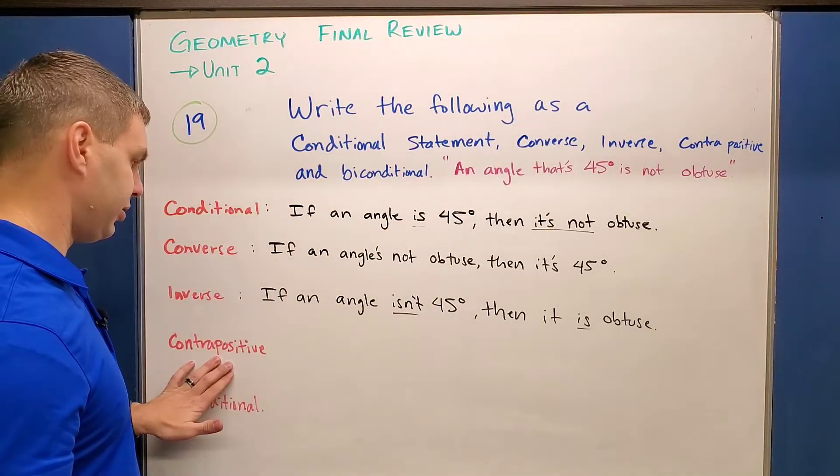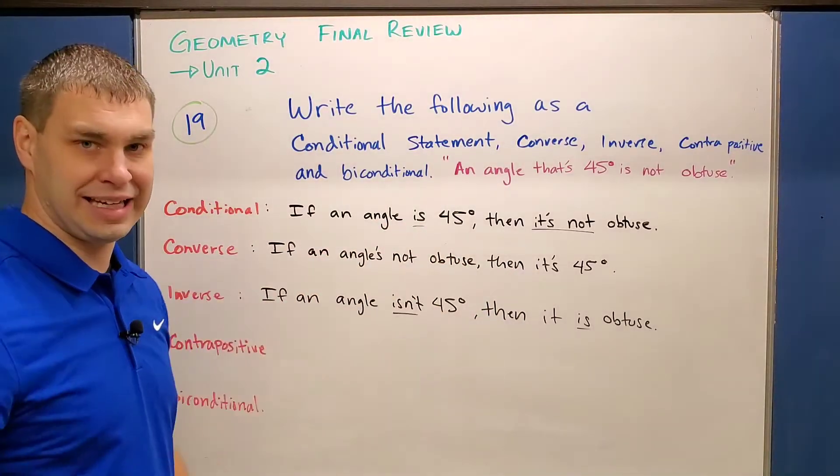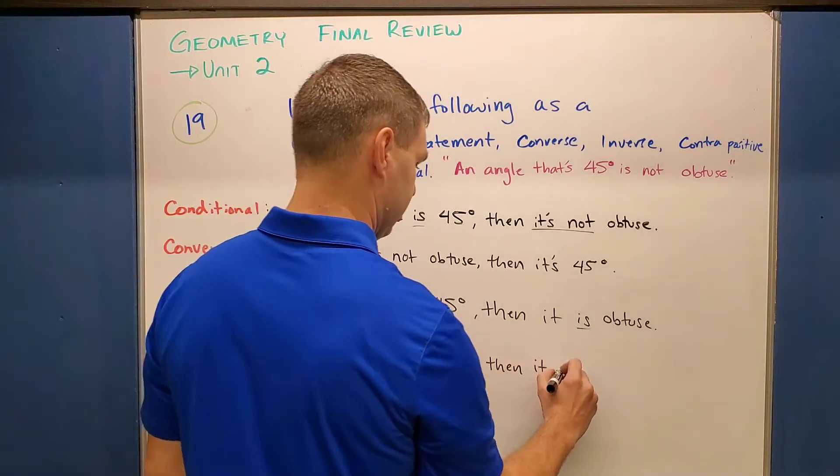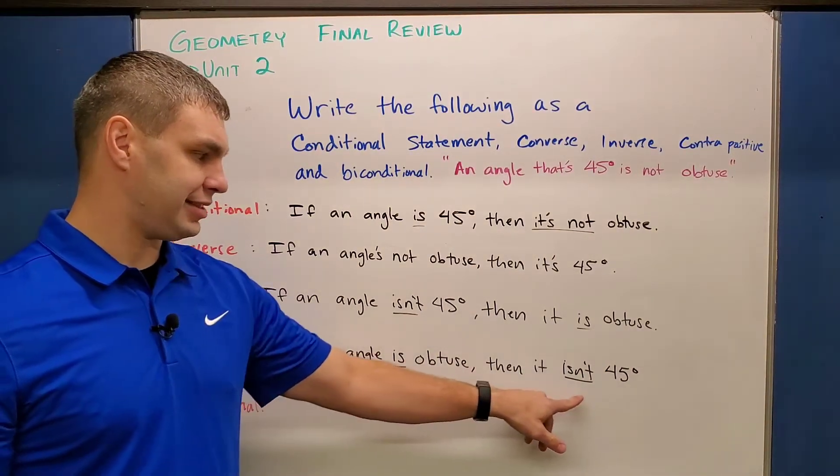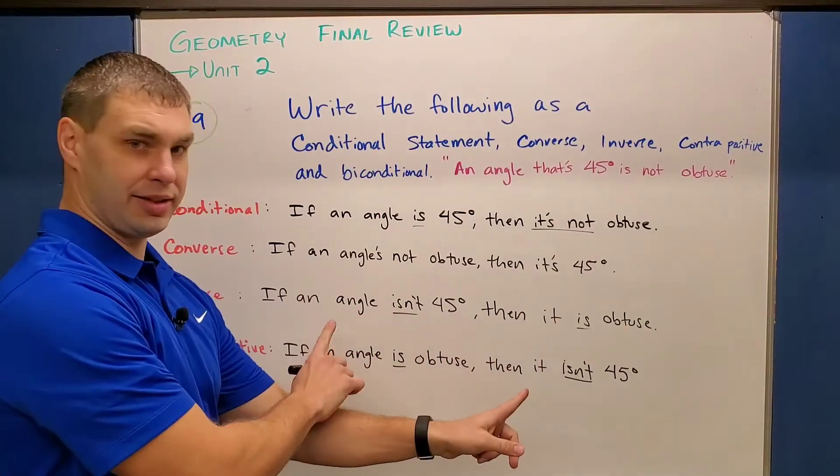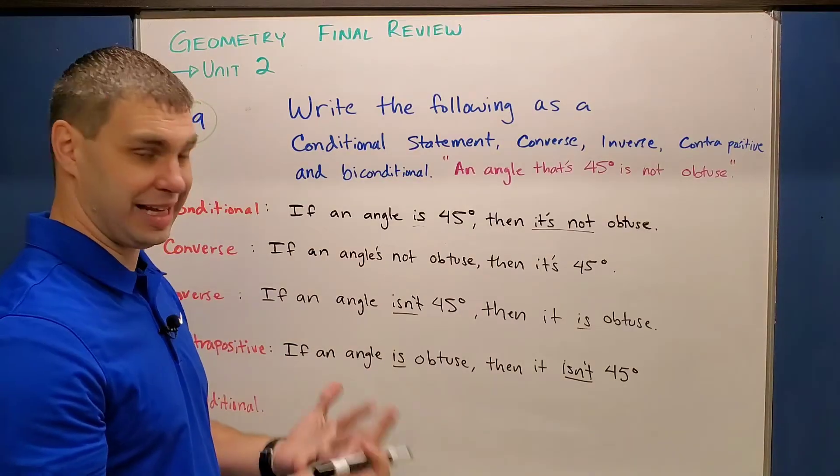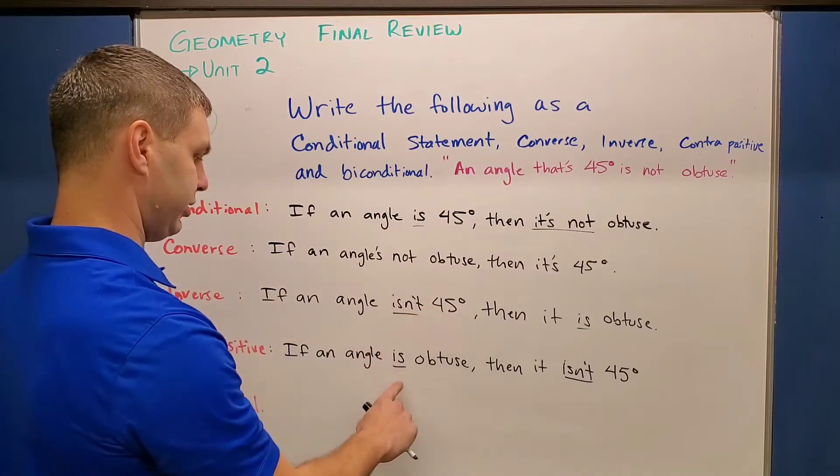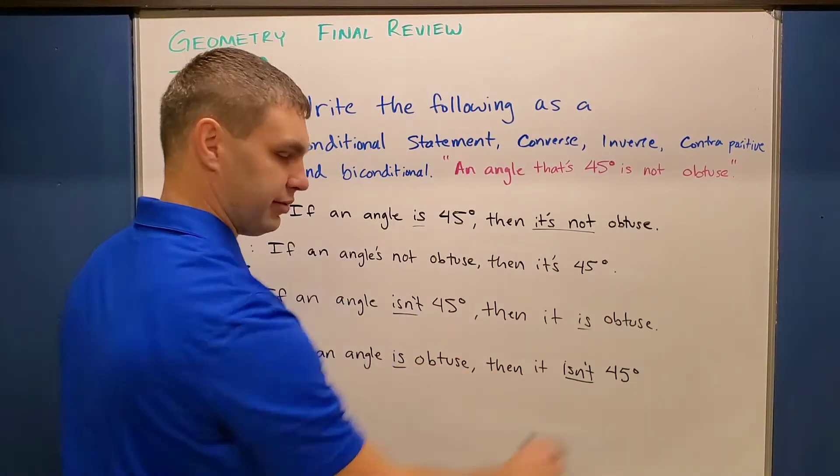The fourth part is the contrapositive. What this one does is it switches the first and last, which is the order, and it negates it. And this says if an angle is obtuse, then it isn't 45 degrees. So again, here I switched my hypothesis and conclusion, as well as I made them both their opposites or made them negative. My original was if an angle is not obtuse, so here it is obtuse, then it is 45 degrees, then it isn't 45 degrees.